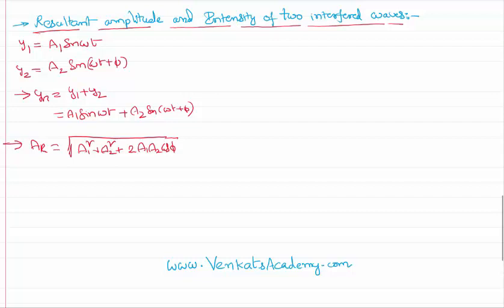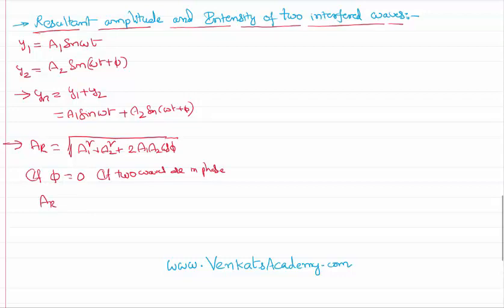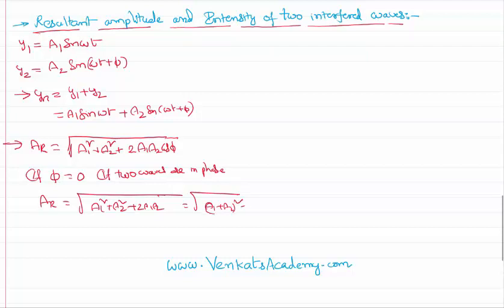It is obvious that if the two waves are having a phase difference of 0, that means if the two waves are in the same phase, then A resultant will become root of a1 squared plus a2 squared plus 2·a1·a2·cos(0). Since cos(0) equals 1, this becomes the square root of (a1 plus a2) whole square, and the square root and square cancel, so it becomes a1 plus a2. This is the maximum possible amplitude.